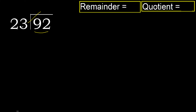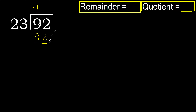23 multiplied by 5 is greater than 92, so we multiply by 4. 23 times 4 equals 92, which is not greater. Subtract: 92 minus 92 equals 0.